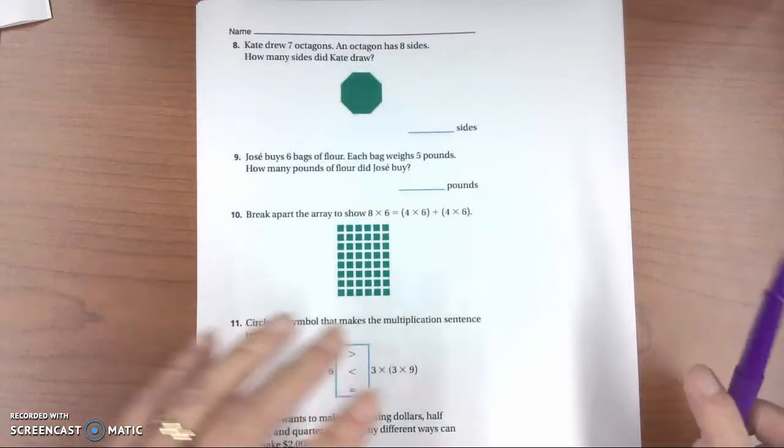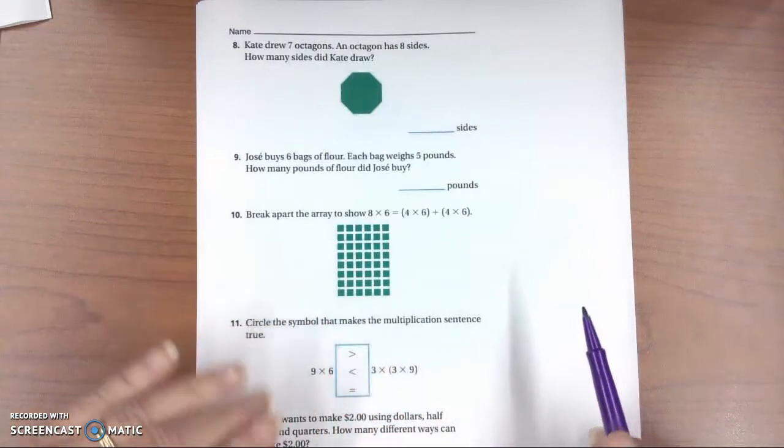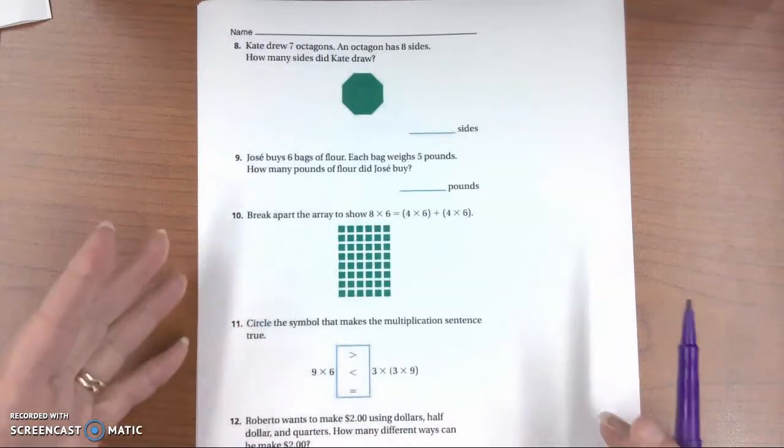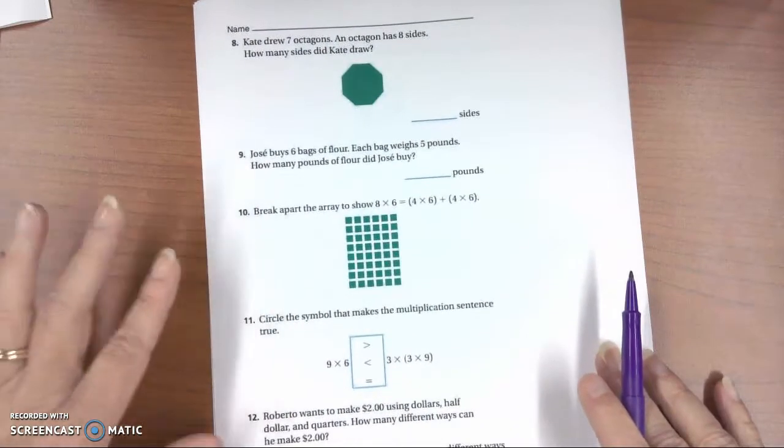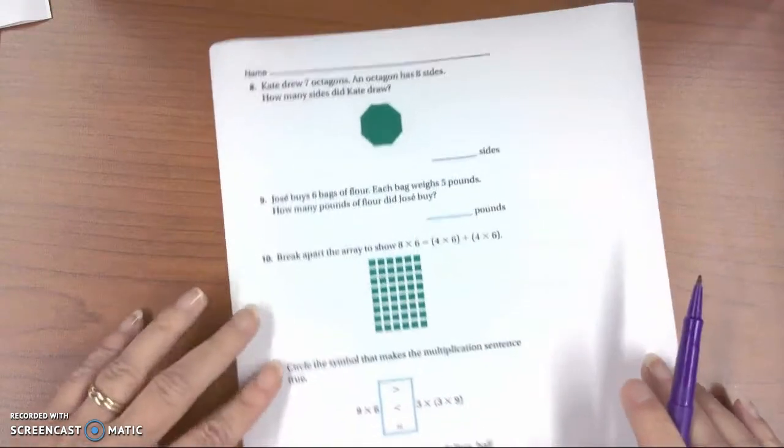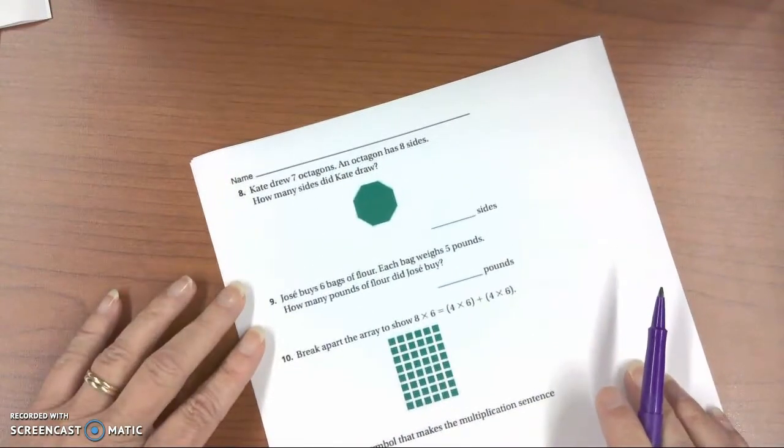This is third grade, chapter 4, unit review. This is the third part in this video series, and this is questions 8 through 12, problems 8 through 12. So we're going to start with question number 8.